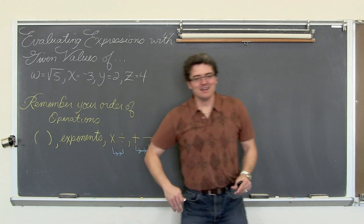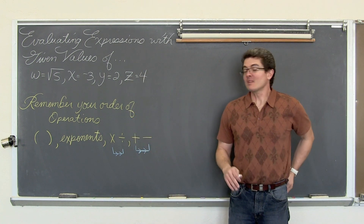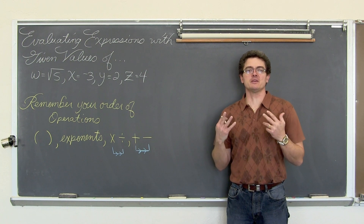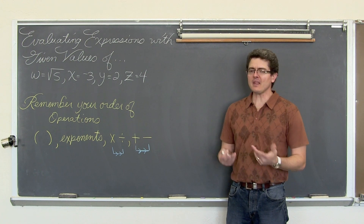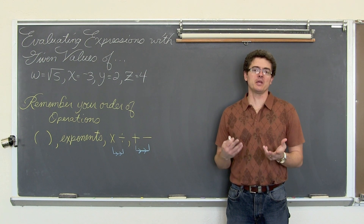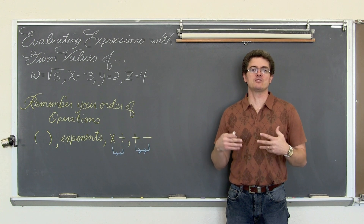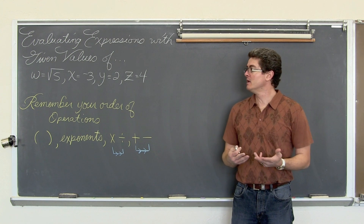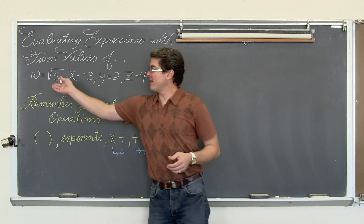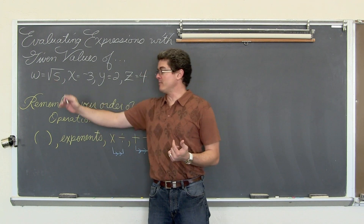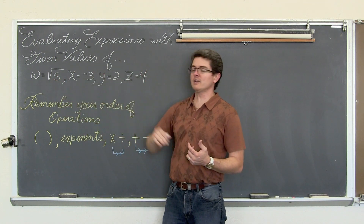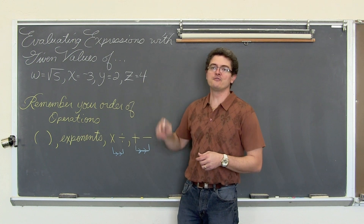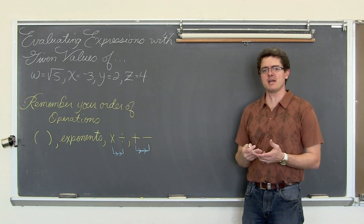BAM! Mr. Tarrou. We are going to be looking at evaluating algebraic expressions. Evaluating means that when we get done we are going to have just a single numerical value. We are going to use the values of square root of 5 for w, negative 3 for x, 2 for y, and 4 for z. We are going to run through six examples.